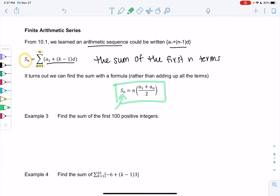That means sum of the first n terms by just doing n times a1, the first term, plus an, the last term, divided by 2. So let's see why this is useful.